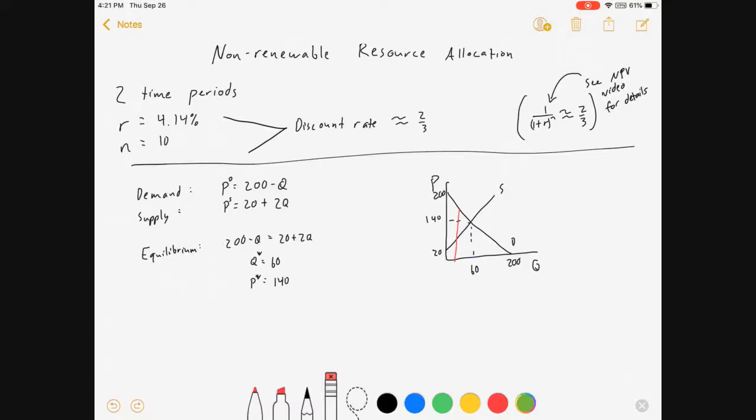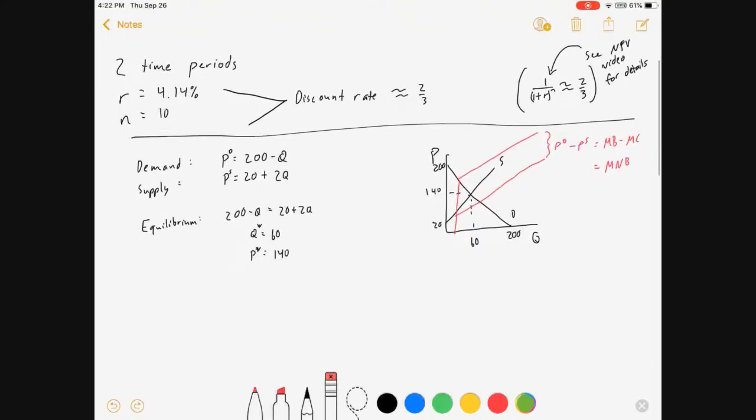If I pick a given quantity given by this red line, there's a gap between the demand price and the supply price. If I trace that gap out and find out how big it is, that's the gap between demand price and supply price, which can also be phrased as the gap between marginal benefits and marginal cost, which in this video we're going to call marginal net benefits. Net benefits being benefits minus costs, and we're comparing net benefits at the margin.